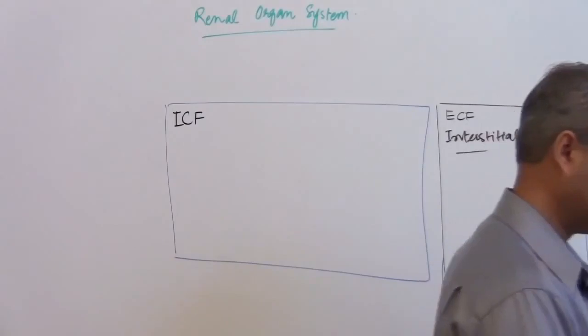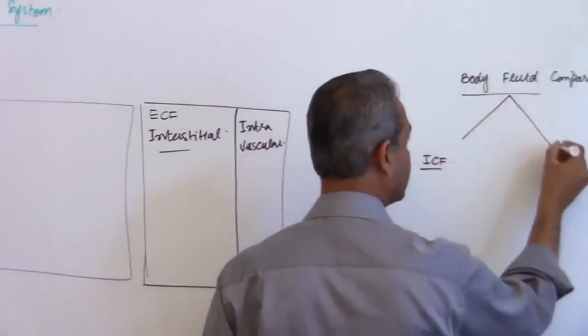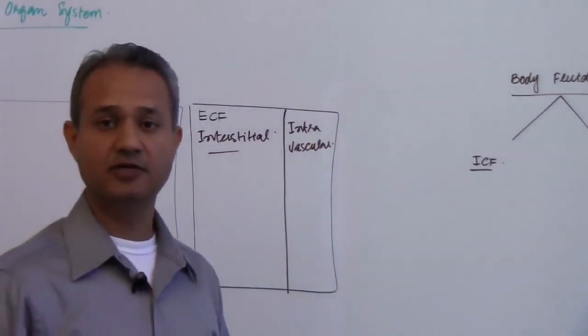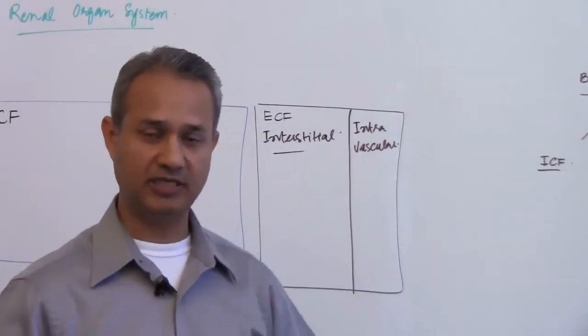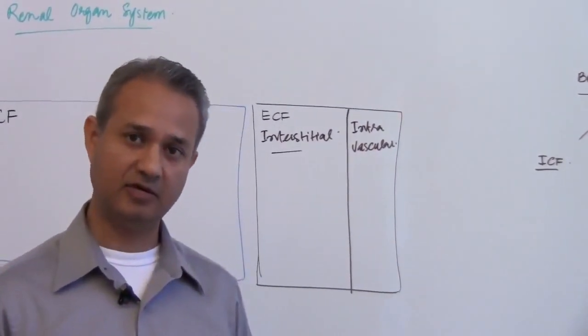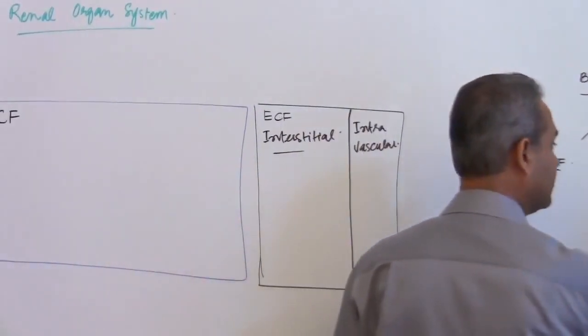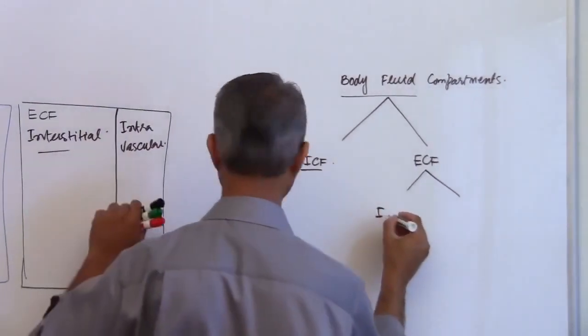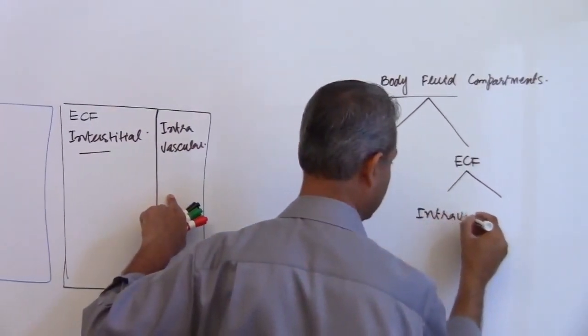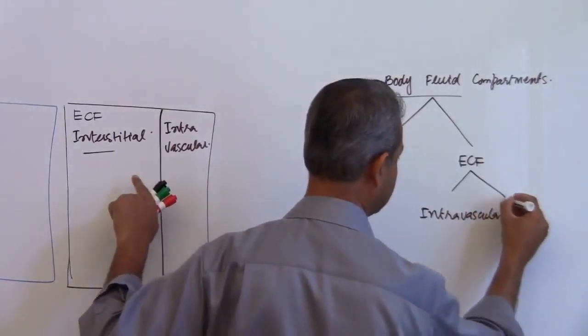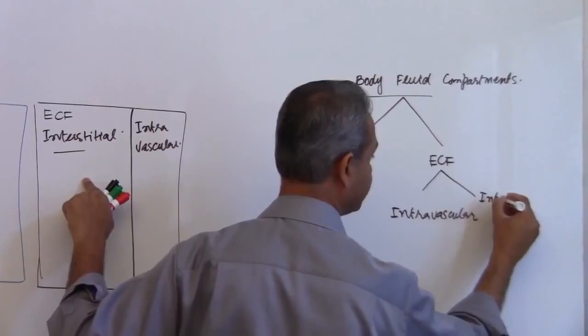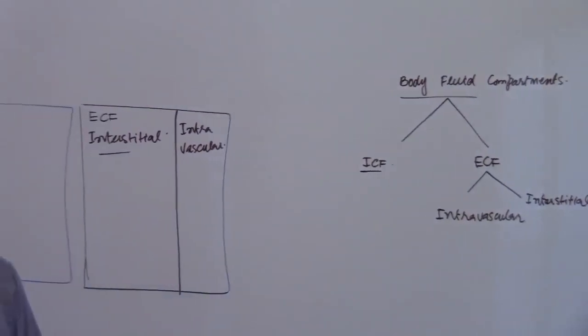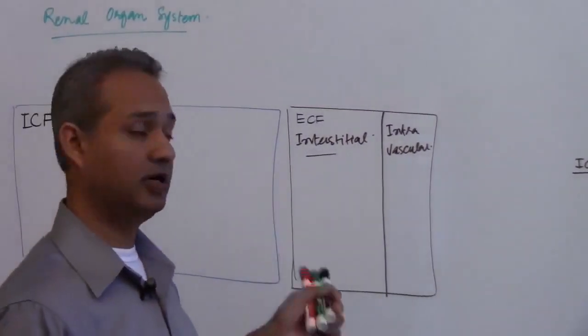So intracellular fluid compartment is one, then we have extracellular fluid compartment, which is really fluid present everywhere outside the cells. Extracellular fluid compartment is then divided into intravascular, as we saw here, and interstitial, which is here.